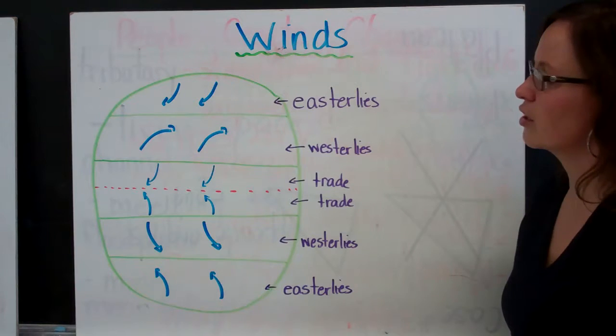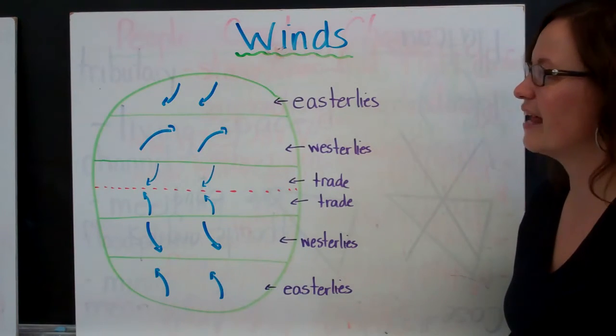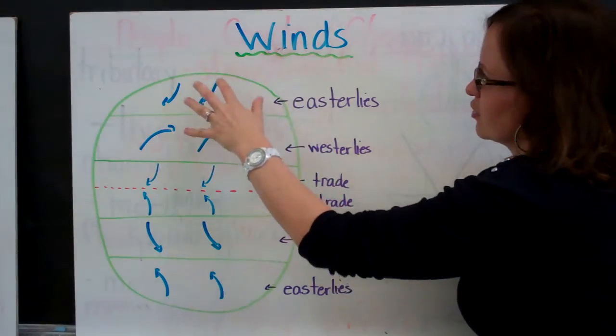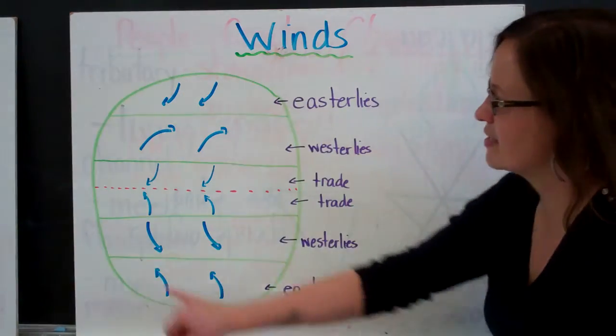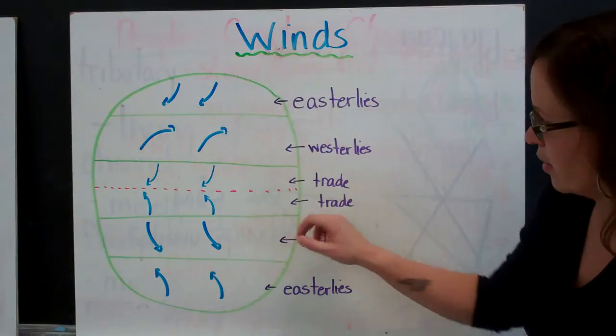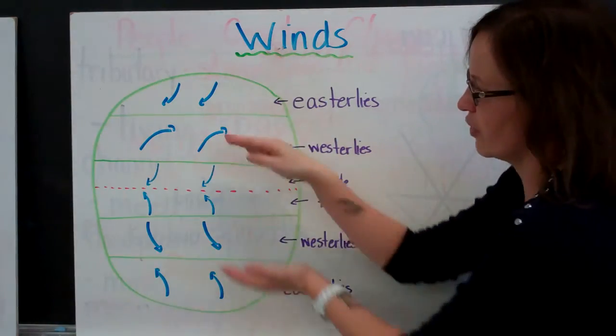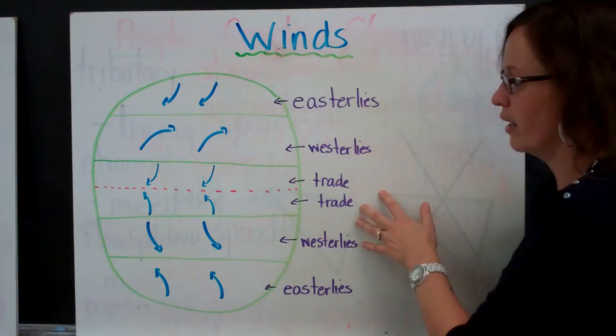Winds. The winds are moving across the Earth's surface constantly, and they affect our climate because they are moving air masses. And so if we think about the Earth and we divide it up into sections, this being the equator, those winds that are coming from the northern and southern hemisphere towards the equator are called trade winds.